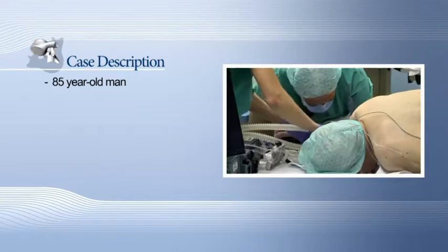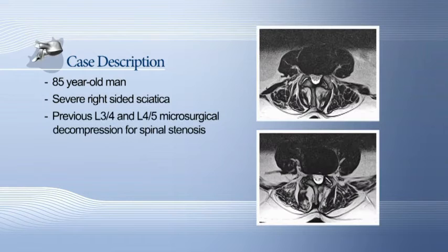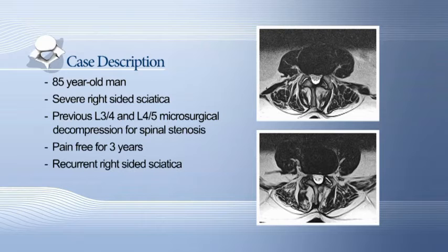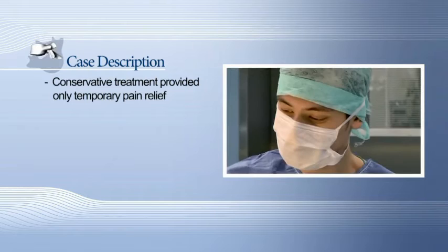The patient is an 85-year-old man suffering from severe right-sided sciatica. He had a previous microsurgical L3-4 and L4-5 decompression surgery due to spinal stenosis. After a pain-free period of three years, recurrent right-sided sciatica in the L4 dermatome with accompanying numbness over the right shin is diagnosed. Conservative treatment and transforaminal L4 nerve root blocks only provided temporary pain relief.